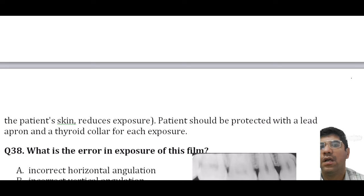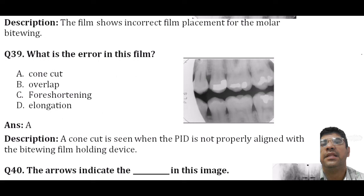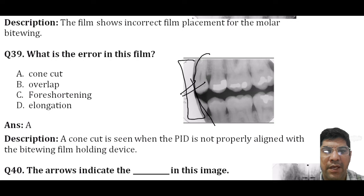The next question asks about an error in film exposure. The film shown shows incorrect film placement for the molar bite wing. The error in this film is a cone cut, which occurs when the x-ray cone is not properly aligned with the film sensor, leading to cone cut and preventing a clear view of the dental structure.